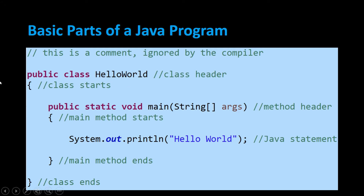Right underneath the class header is an opening curly brace and a closing curly brace lined up directly below it — this is the body of the HelloWorld class. Within the body there is what's called a main method: public static void main, String[] args. I don't expect anybody at this point to know what these words mean, but the main method header is needed for any executable Java program. If you want your program to run, it has to have this main method.